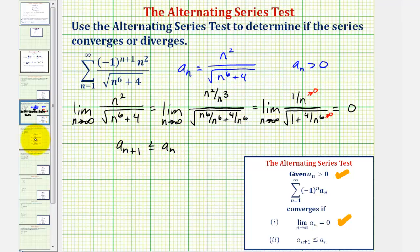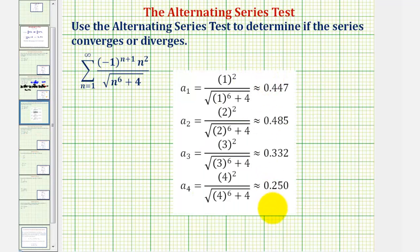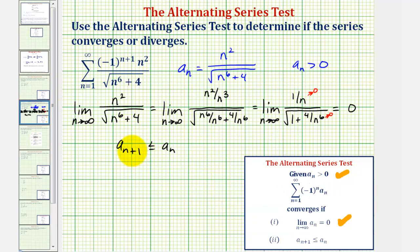To save some time, I've already used the formula for a sub n to generate the first four terms. Notice how from the first to second term, the terms are actually increasing, but from the second term on, the terms are decreasing. Therefore, we can say that a sub n plus one is less than or equal to a sub n for n greater than or equal to two.